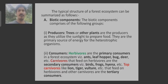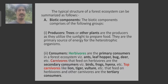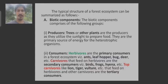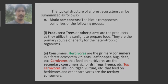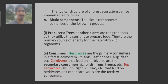Next is consumers. Consumers include subcategories such as herbivores, carnivores, and omnivores. Herbivores are those animals which feed on grasses or plants. Carnivores feed on meat, and omnivores feed on both plants and meat. Herbivores of the forest ecosystem are also known as primary consumers because they are the first to consume the producers. Examples include ants, leafhoppers, bugs, and deer.